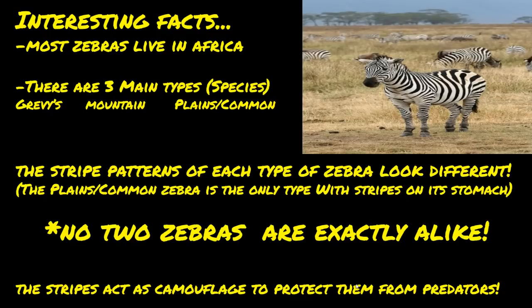There are some interesting facts about zebras. Most of them live in Africa and there are three main types or species: Greaves, mountain, and plains, also called common. The stripe patterns of each type look different. The plains or common zebra is the only type with stripes on its stomach. No two zebras are exactly alike. The stripes act as camouflage to protect them from predators. Notice how the zebras in this image blend into the landscape.